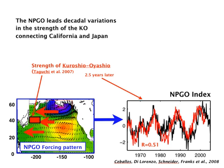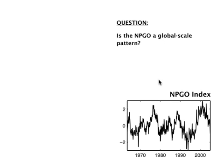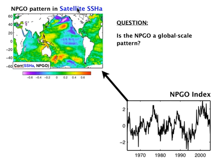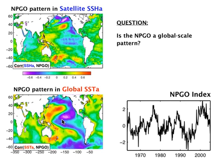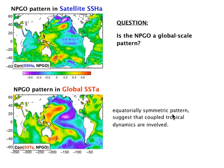This raises the question of whether the NPGO is a global-scale pattern. Taking the NPGO index and correlating it with global satellite sea surface height data, we find a large-scale pattern: a strong dipole intensification associated with the gyre-scale circulation in the Northeast Pacific, extending to the tropics and Southern Ocean, with connections in the Indian Ocean. A similar correlation with global sea surface temperature data also shows a global-scale structure in the Pacific, including an equatorially symmetric pattern, suggesting coupled tropical dynamics are also involved in the NPGO — linking the tropics, the Northeast Pacific, and the western boundary.